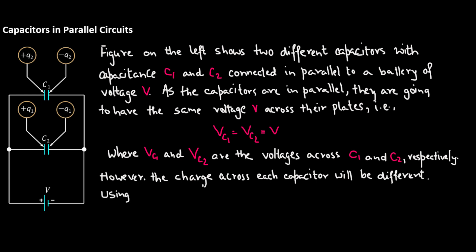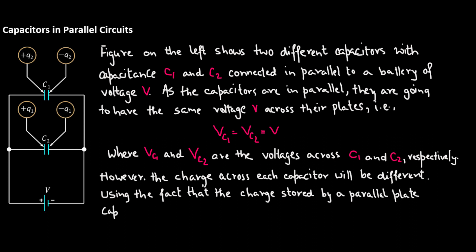Using the fact that the charge stored by a parallel plate capacitor is Q equals CV, we get Q1 equals C1 times V and Q2 equals C2 times V.